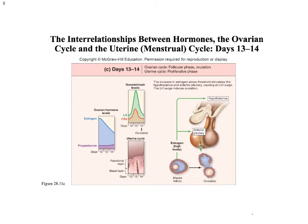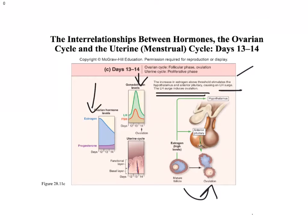When ovulation occurs, estrogen levels are going to be really high, and luteinizing hormone and follicle-stimulating hormone are going to be high. An increase in estrogen above the threshold stimulates the hypothalamus and anterior pituitary, and it causes a surge in luteinizing hormone. The surge in luteinizing hormone induces ovulation. So if someone's checking to see if they're ovulating, they're going to be looking for luteinizing hormone.